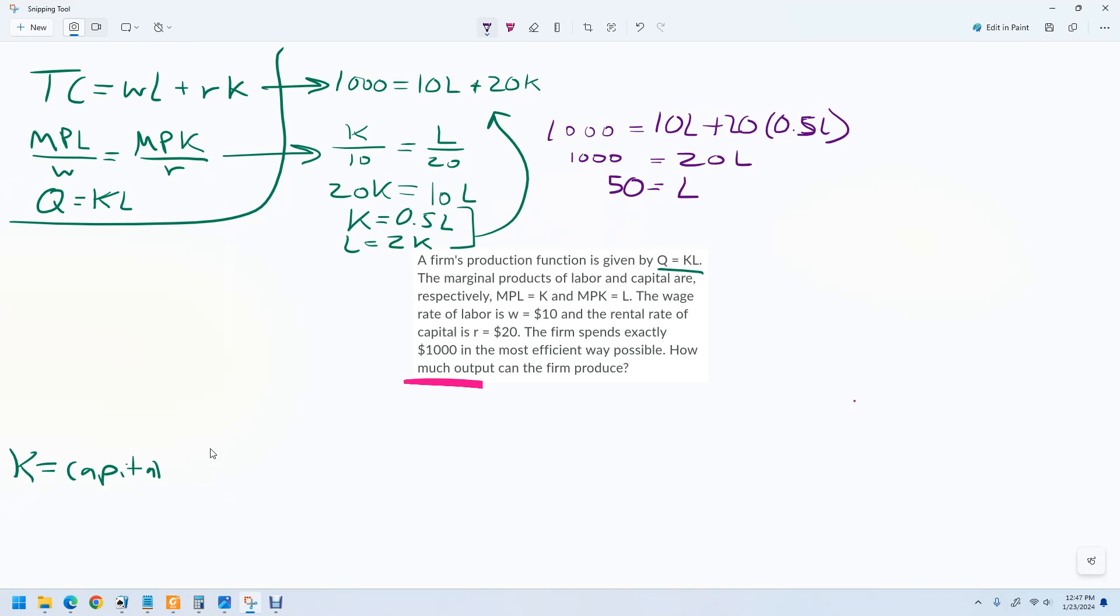So now it's your choice. You could plug in this right into there. You could also say, we could plug it back into our cost function, and we could say that this would be 10L. This would be 500 plus 20K, and then this would be 500 equals 20K, and K equals 25. So this is the optimal combination right here. So K is 25, labor is 50, and then we just plug both of these into our production function.